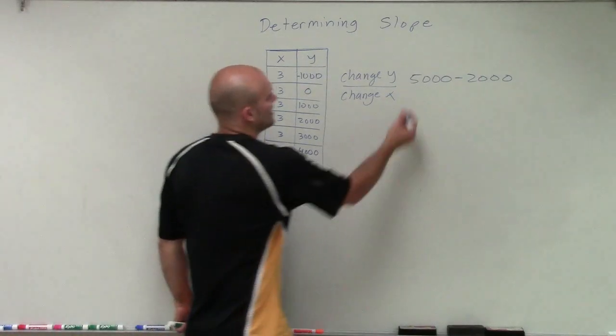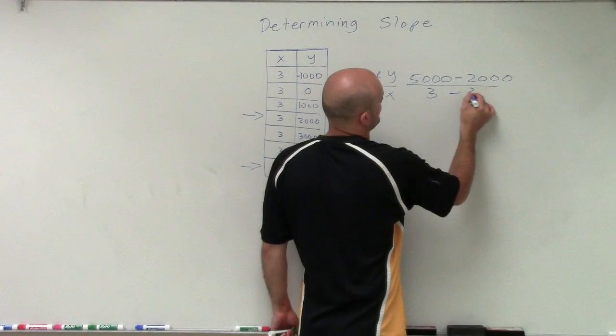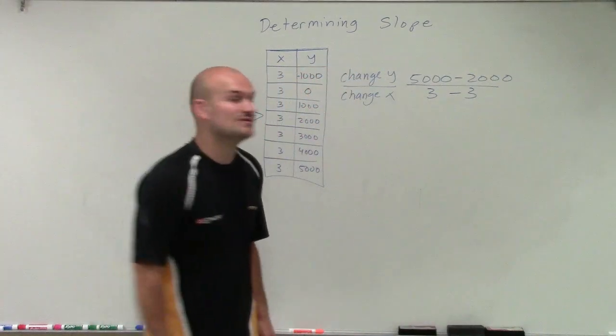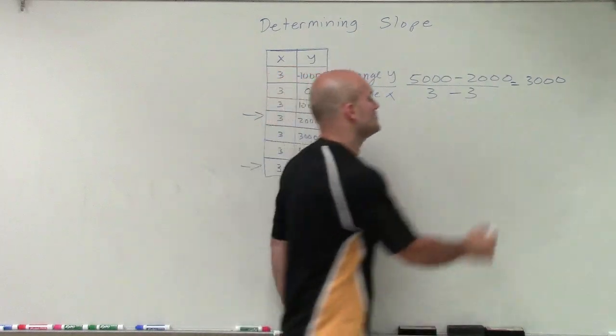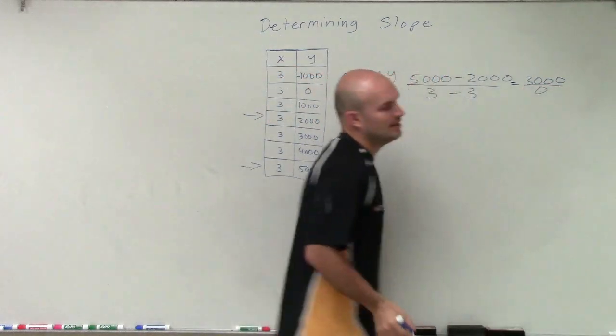Then to find the change in my x-values, I need to do the same thing. Well, 5,000 minus 2,000 is going to give me 3,000. And 3 minus 3 is going to equal 0.